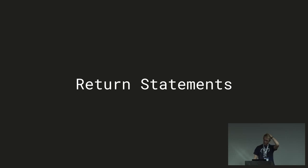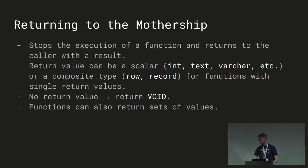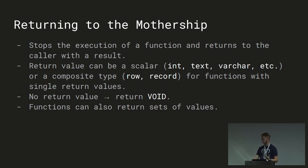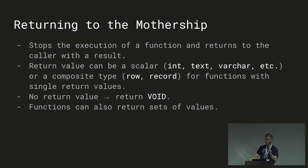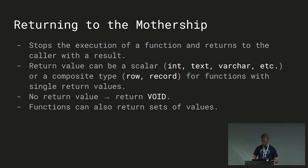Now, returning from a function — this is how we get our results. A return statement stops the execution of the function and returns to the caller with a result. That result can be a scalar or a composite type. A scalar is just one of your primitive types. A composite would be a row or a record. If you don't return something, you return void. Functions can also return sets of values — think of it as calling a function and having it return an entire table to you. A row is exactly like a table row: you have your types and you know which fields they have. A record is much more variable with no fixed structure.